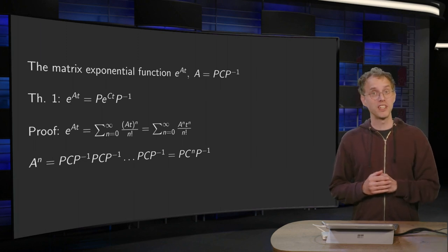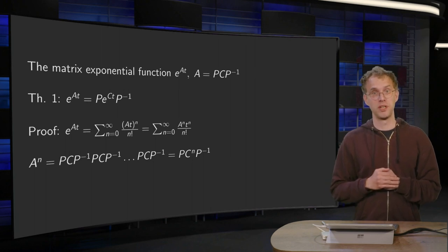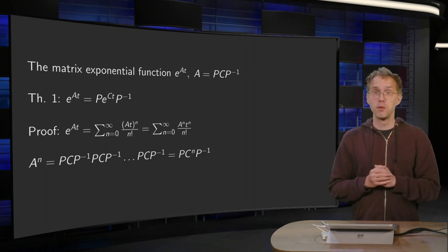How can we compute the matrix exponential function if A has complex eigenvalues? This turns out to be surprisingly easy.